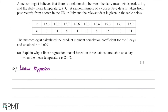In this question we're told that a meteorologist believes there's a relationship between the daily mean wind speed, denoted by W and measured in knots, and the daily mean temperature, denoted by T and measured in degrees Celsius. A random sample of nine consecutive days is taken from past records from a town in the UK in July, with the relevant data given in the table below, showing temperatures and daily mean wind speeds.